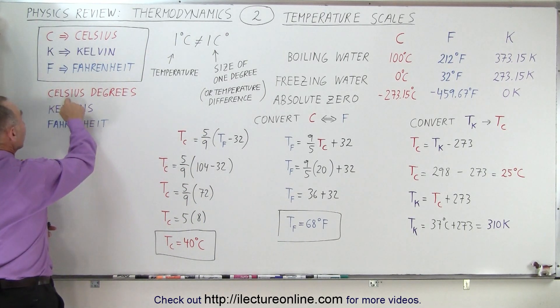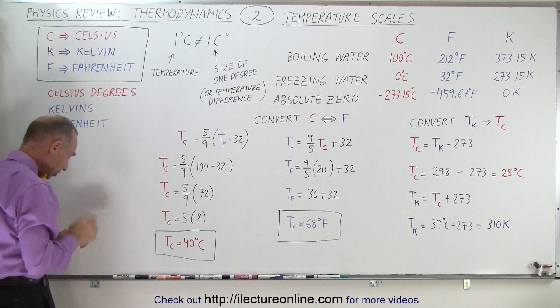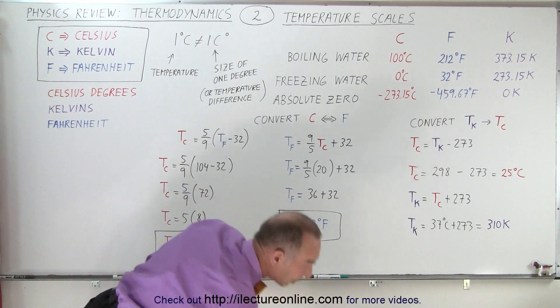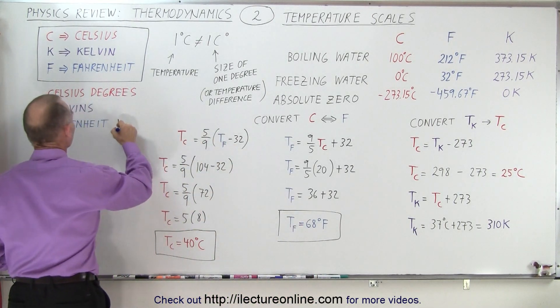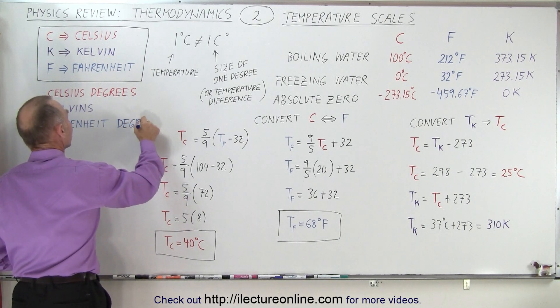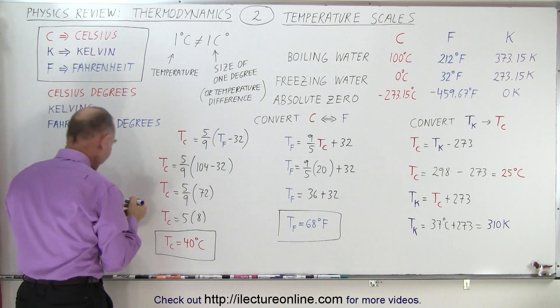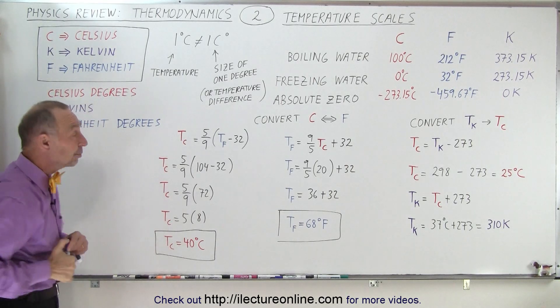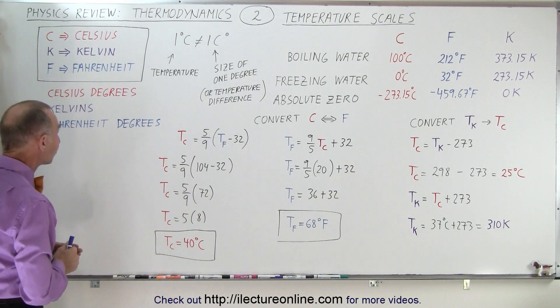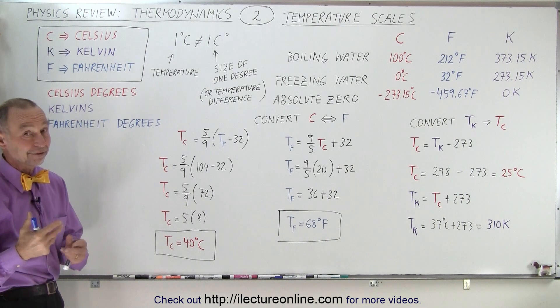Notice that we talk about Celsius degrees and Fahrenheit degrees. But when it comes to the Kelvin scale, we don't say Kelvin degrees, we simply say Kelvins. So we have 5 Kelvins instead of 5 Kelvin degrees.